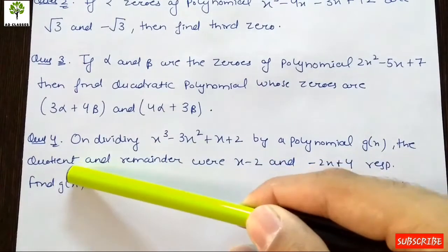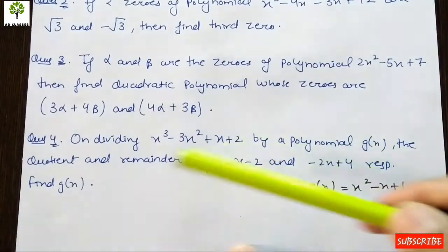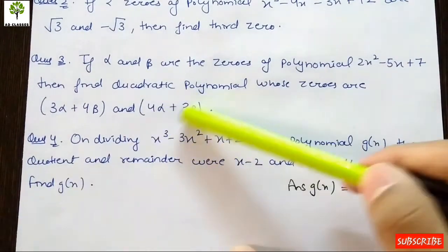The quotient is x - 2 and the remainder is -2x + 4. Then find g(x). We have to find the polynomial that divides the other polynomial.